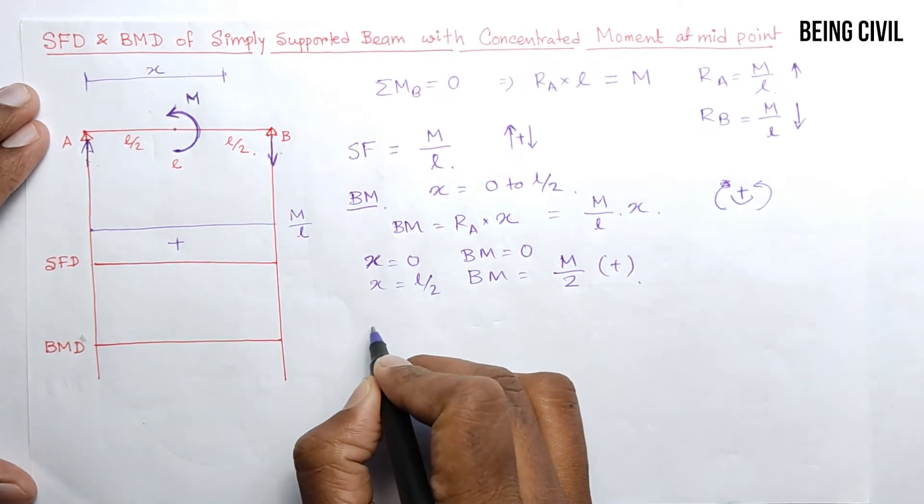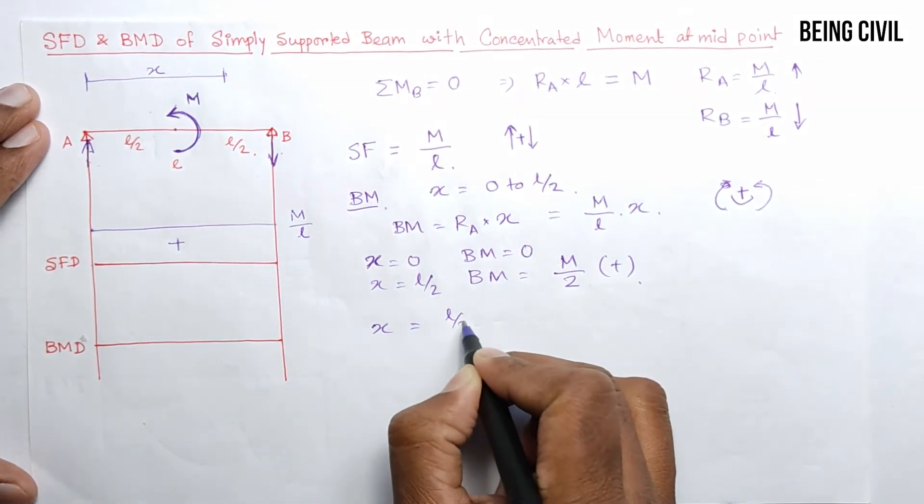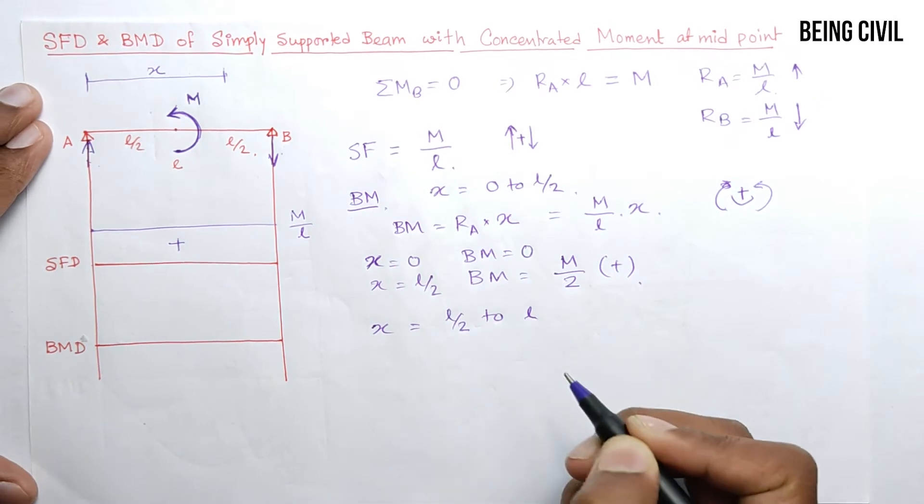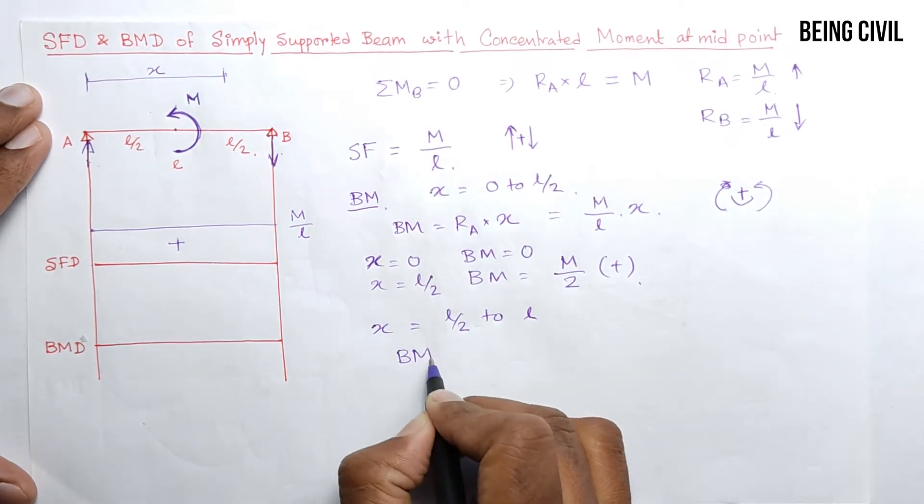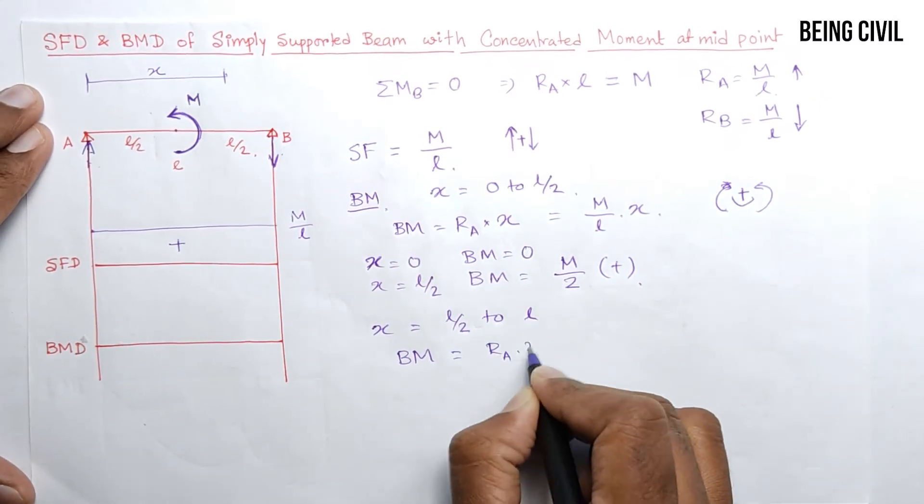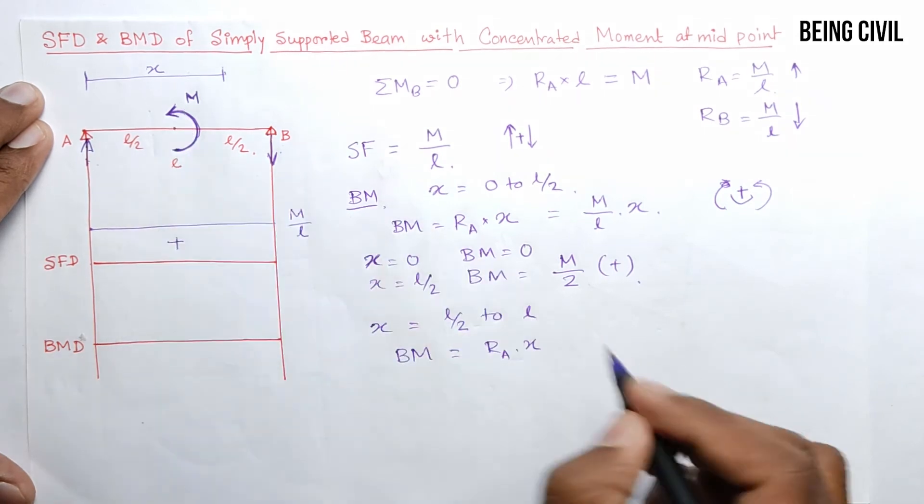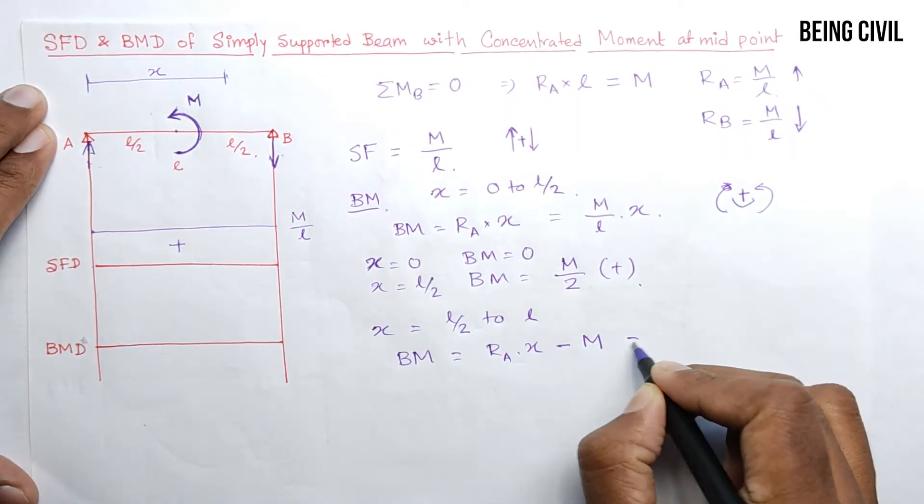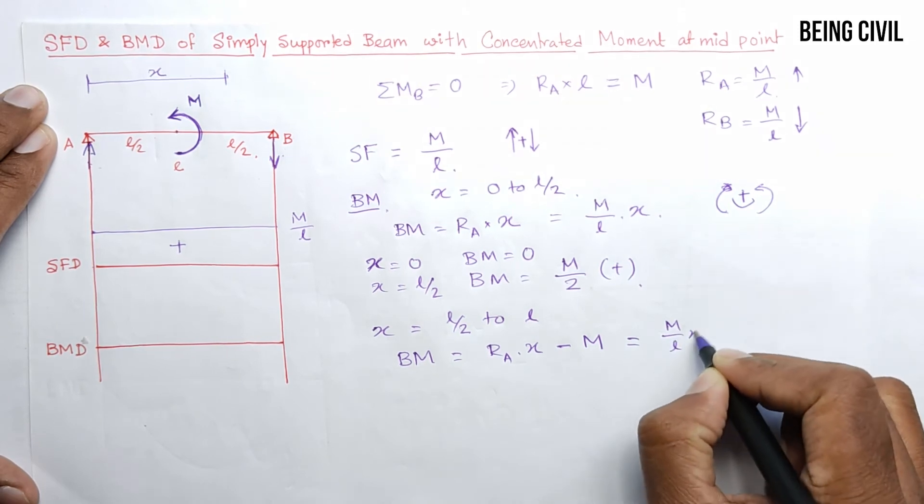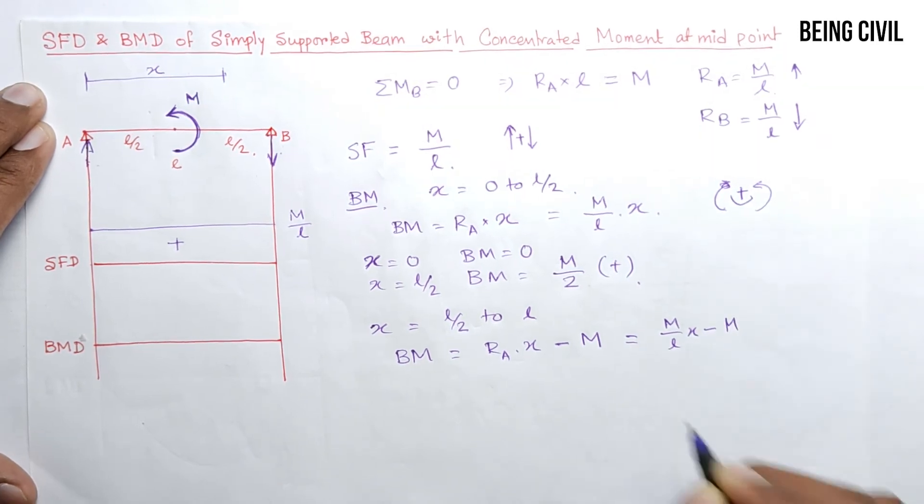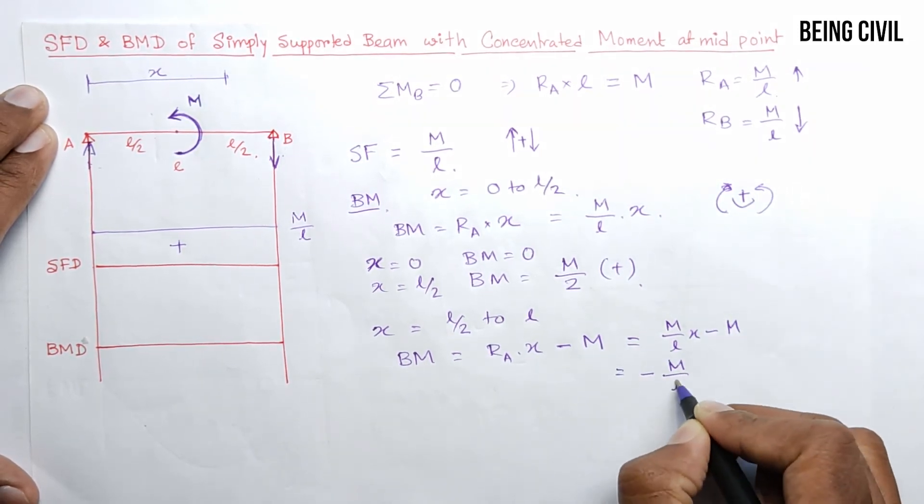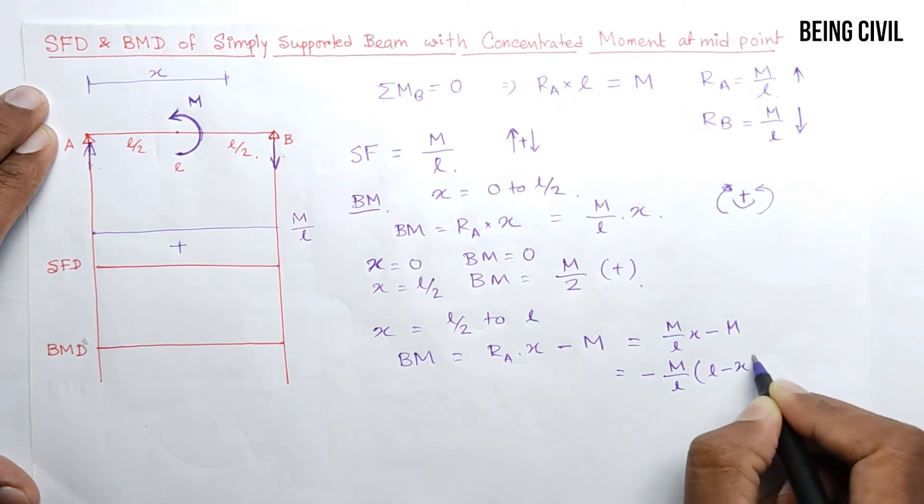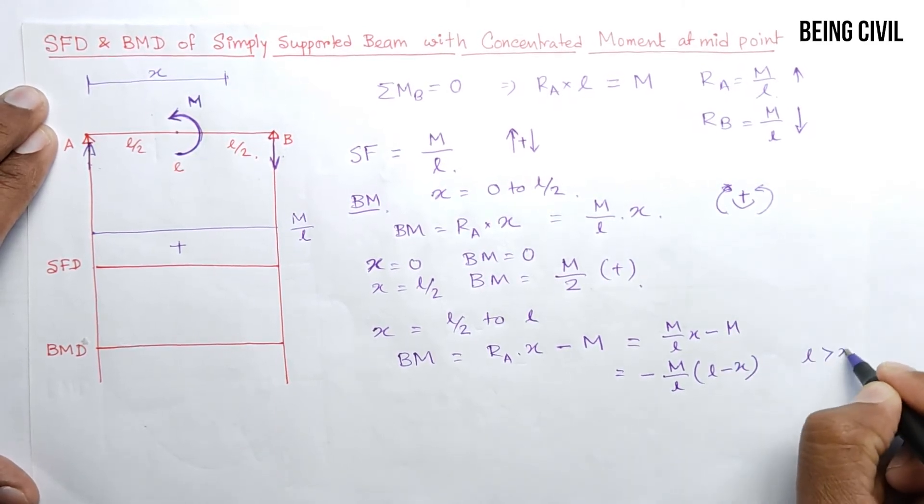Now for the right half of this beam where X equals L/2 to L, bending moment will be equal to RA into X, and this moment is opposite direction, so negative M. Equal to M/L into X minus M. Take minus M/L common: L minus X. As L is greater than X, so this is a negative bending moment and it is hogging in nature.